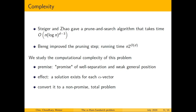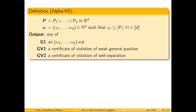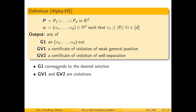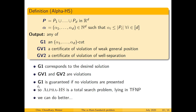We want a formulation that requires no assumptions on the input point set. This can be done by allowing more outputs: given the colors and the alpha vector as input, apart from a hyperplane as a solution, we also allow certificates witnessing violations of the two conditions. G1 is a solution we would ideally like, and GV1 and GV2 tell us that either weak general position or well separation has been violated. The theorem says a G1 solution is guaranteed if there are no violations; otherwise there must be a violation. So this search problem is a total search problem lying in the complexity class TFNP.